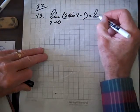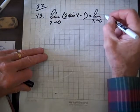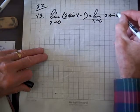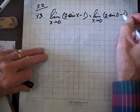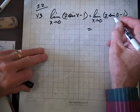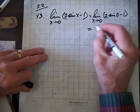So, we've got the limit as x goes to 0 of 2 times the sine of 0 minus 1. Well, the sine of 0 is 0, and 2 times 0 is 0, so we just get minus 1, and we're done.